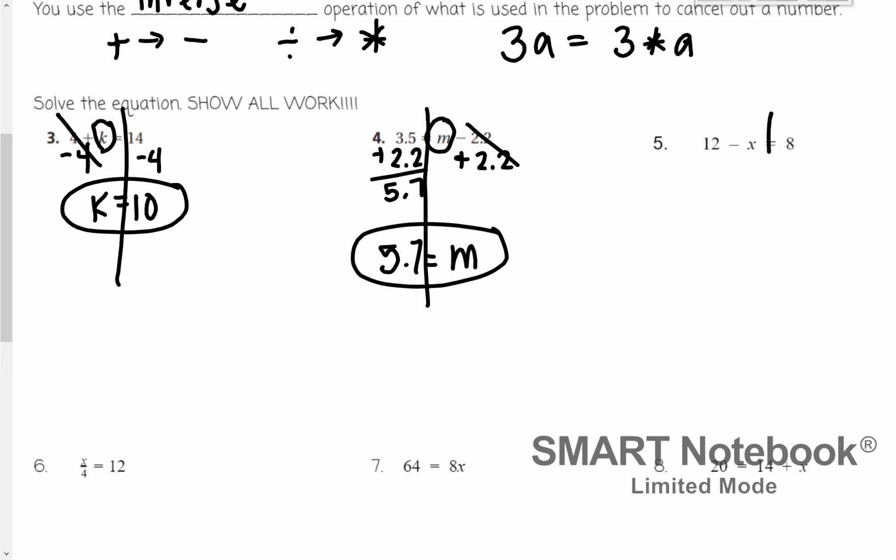Number 5, draw that line down that equal sign. Circle our x. Alright. We can't get rid of a minus 12 because we're not subtracting 12 from x. We're subtracting x from 12.